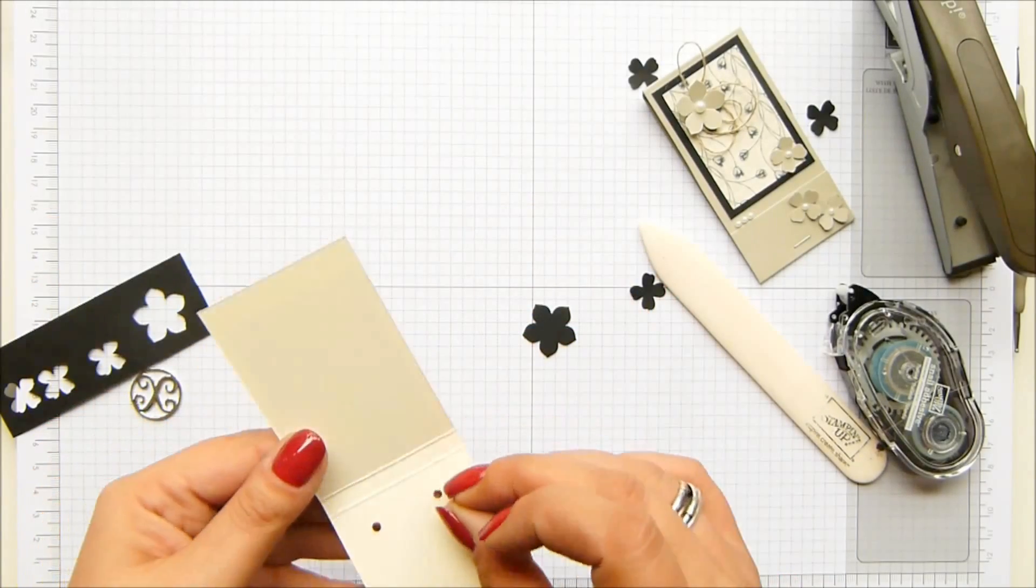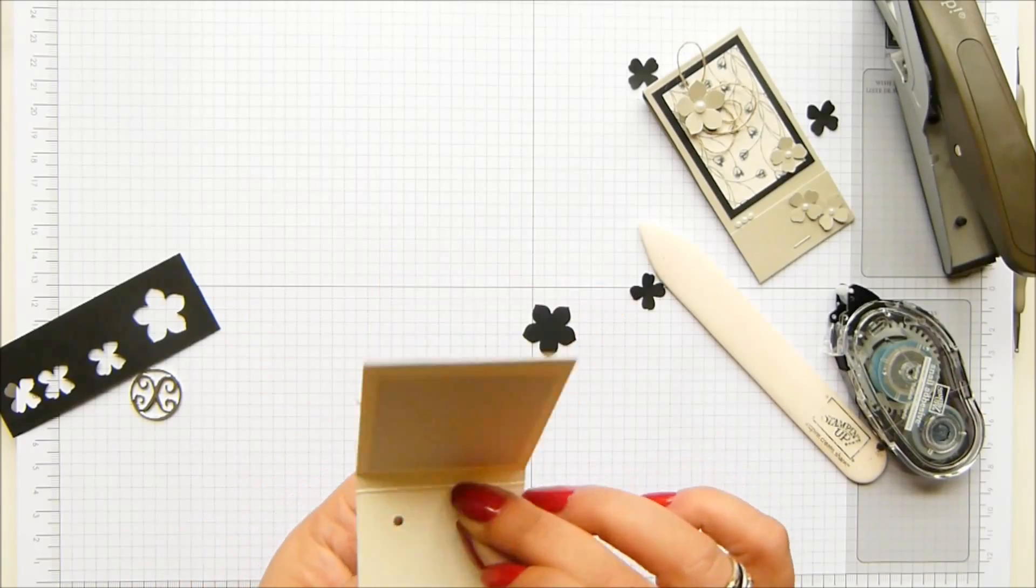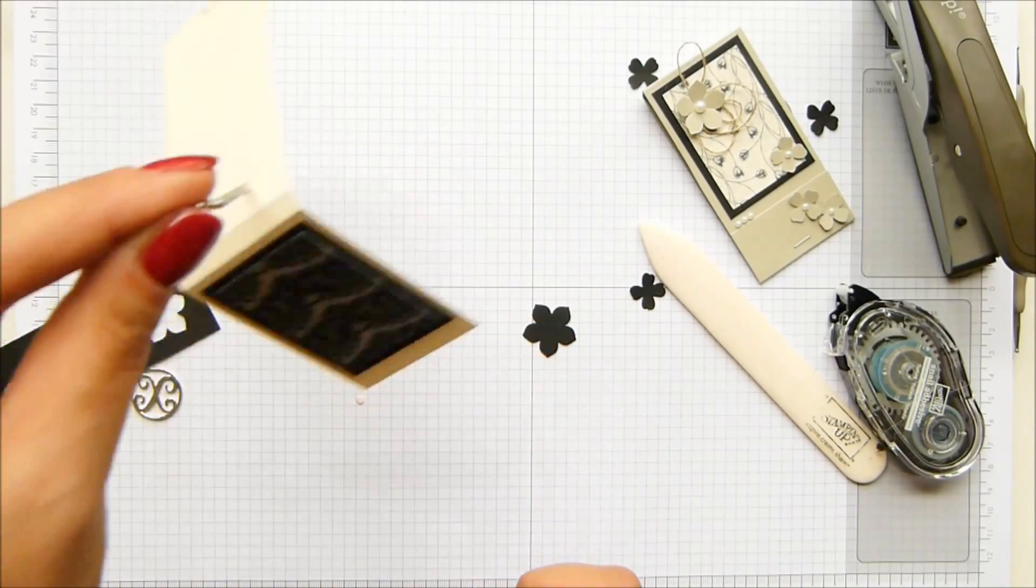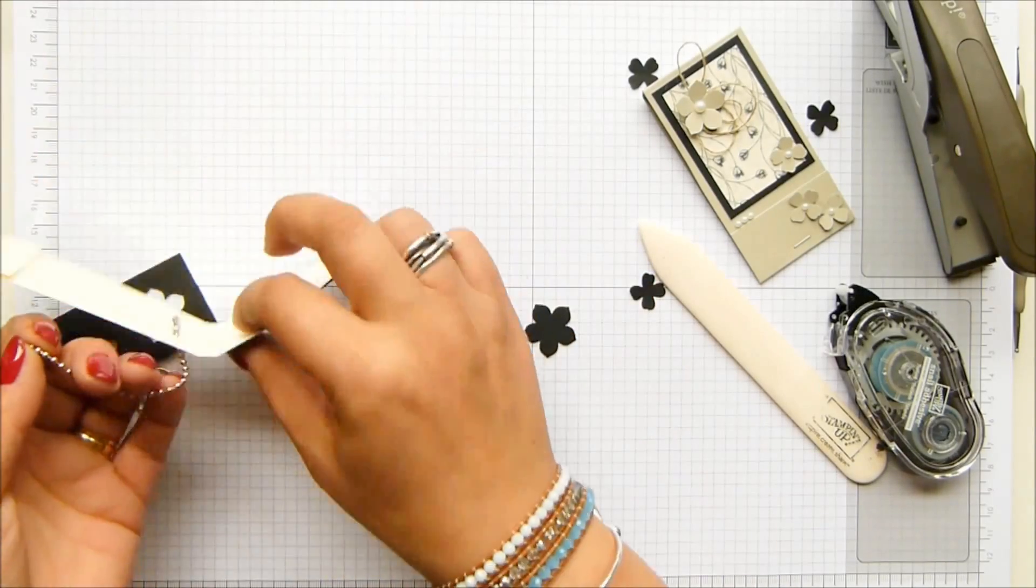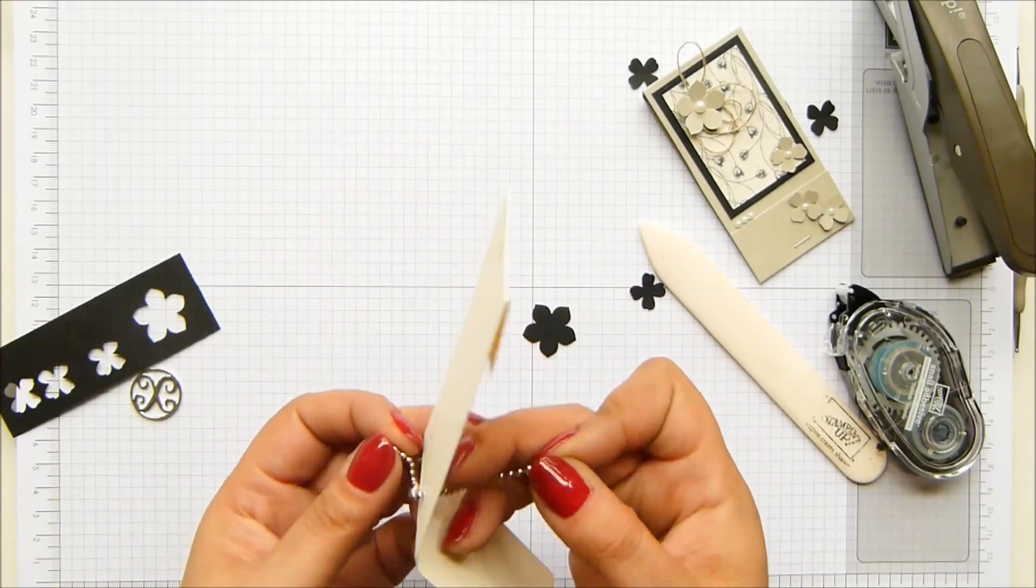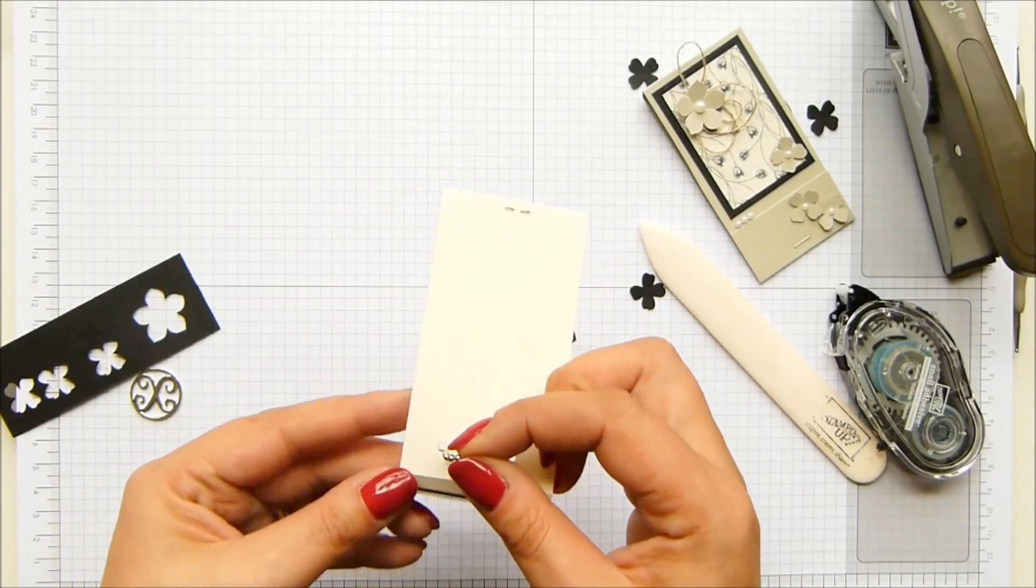So loop it through and the clasp is big enough that it won't pull through. This is the, this part here is what you loop it together with. So it won't pull through. So that's why you start off with that bit.